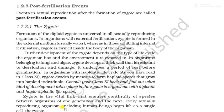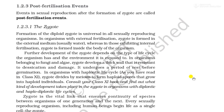All sexually reproducing organisms, including human beings, begin life as a single cell — the zygote. So in the case of human beings, a single cell is the whole organism, and that cell is the zygote.